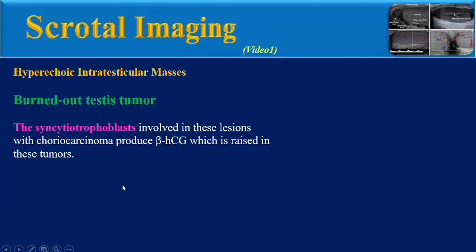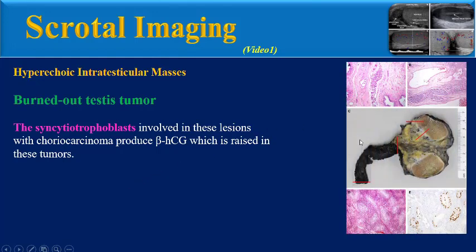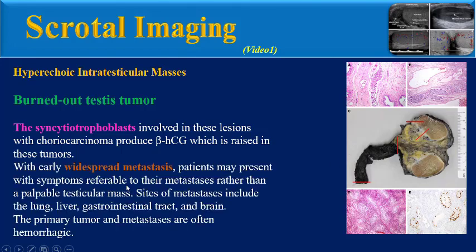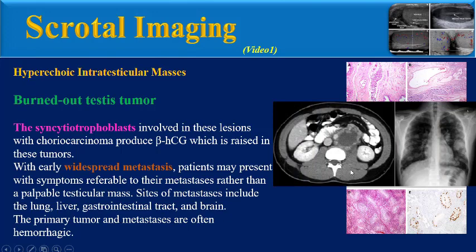The syncytotrophoblasts involved in these lesions with choriocarcinoma produce beta-HCG, which is raised in these tumors. With early widespread metastasis, patients may present with symptoms referable to their metastasis rather than a palpable testicular mass. Sites of metastasis include the lung, liver, GI tract, and brain. The primary tumor and metastasis are often hemorrhagic.